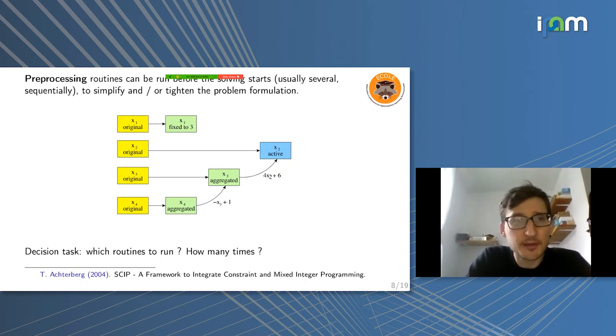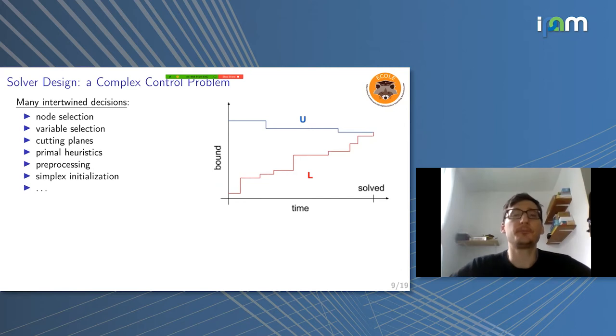Another important part in exact solvers is preprocessing. You have preprocessing routines which you can run that will try to shrink your MILP, try to fix some variables. If you can deduce that some variables can be fixed, maybe remove some redundant constraints and so on. And again, which routines should you run for a specific MILP? How many times? Preprocessing can be costly, but maybe you want to spend this time because it's going to save you time later on. And again, there is no clear answer to which preprocessing routines work best for which problems.